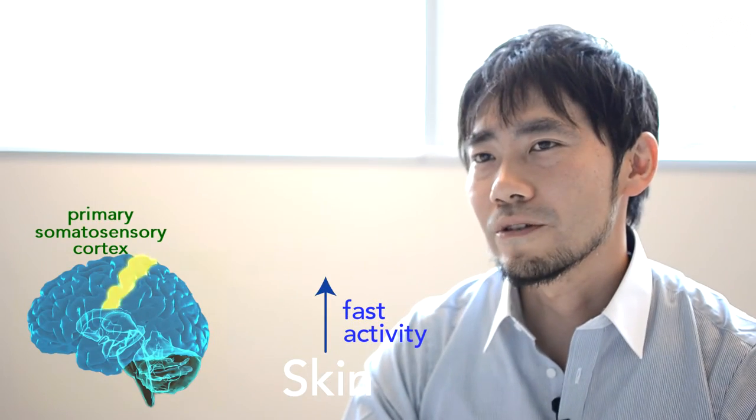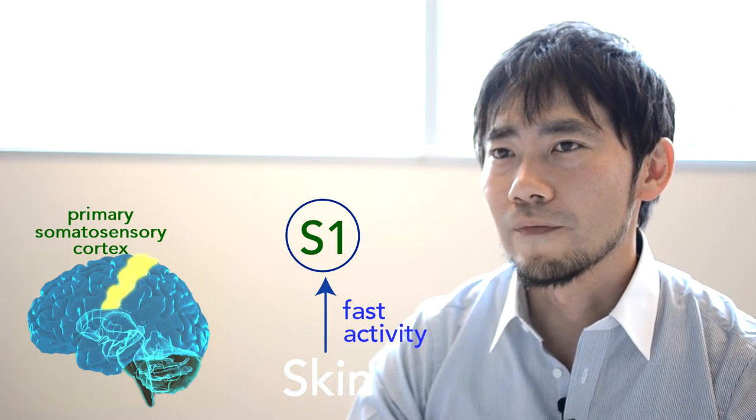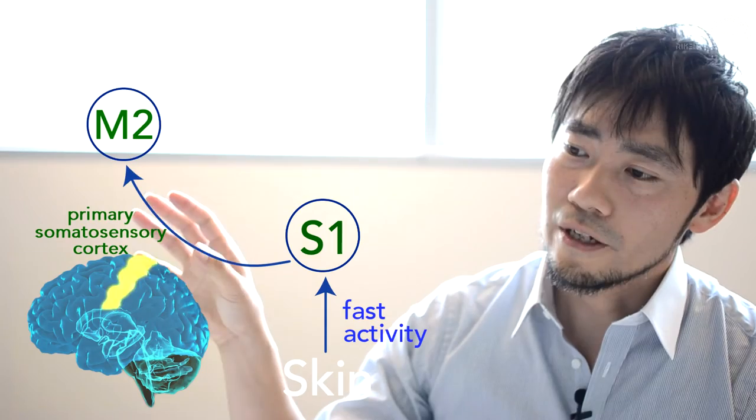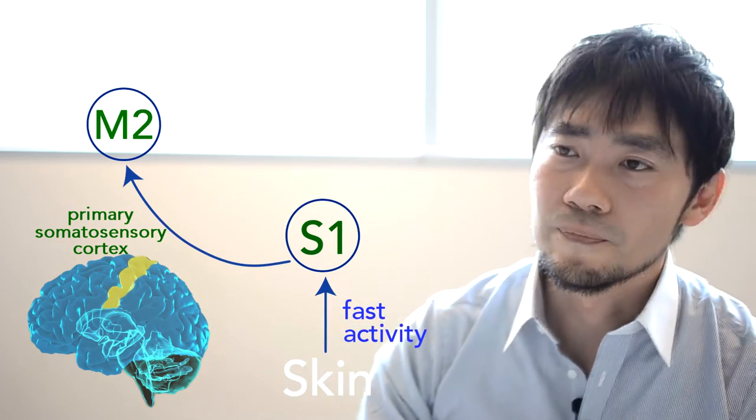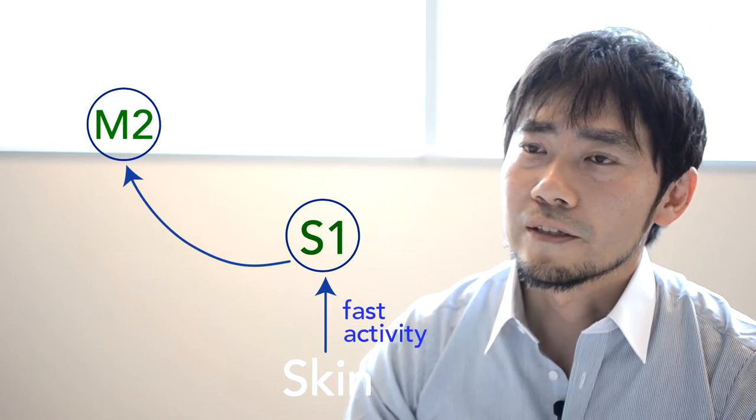In this study, we explore the circuit information flow and the operation mechanisms of sensory perception. It was already known that the skin information, for example from hand, is sent primarily to sensory cortex called S1, and then this S1 area also sends information to higher order brain regions.